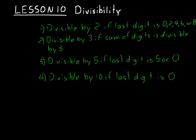In lesson 10, we'll be covering rules for divisibility of whole numbers. There's four rules that I've written on the board there. A number is divisible by 2 if the last digit is 0, 2, 4, 6, or 8. A number is divisible by 3 if the sum of the digits is divisible by 3. That seems kind of strange, but that's true.